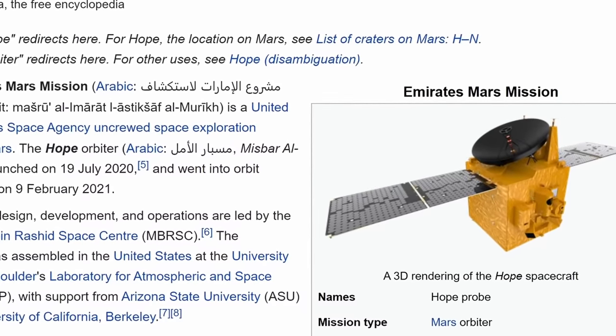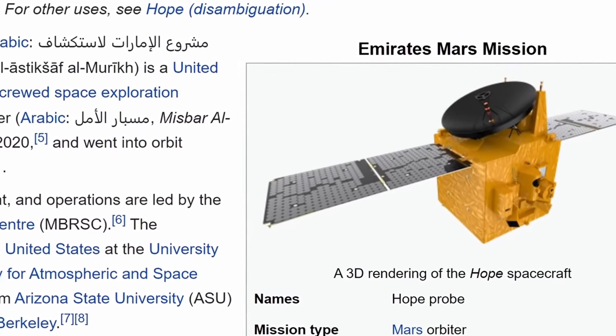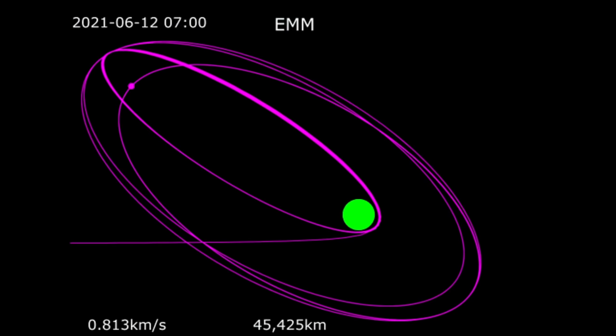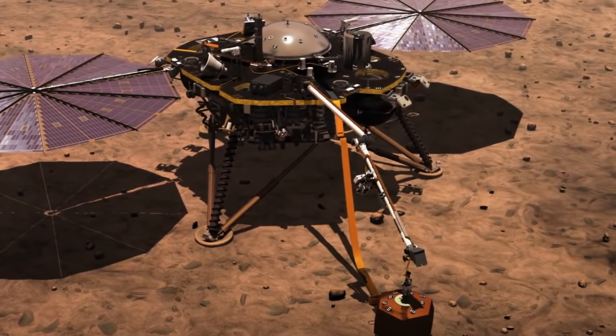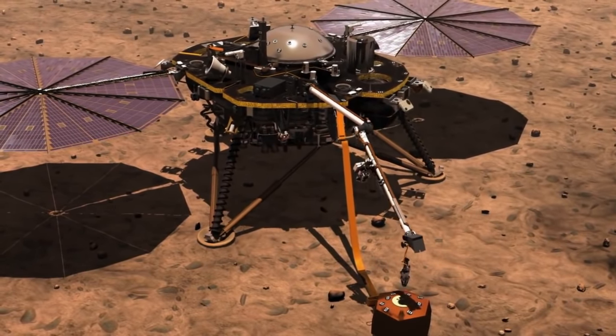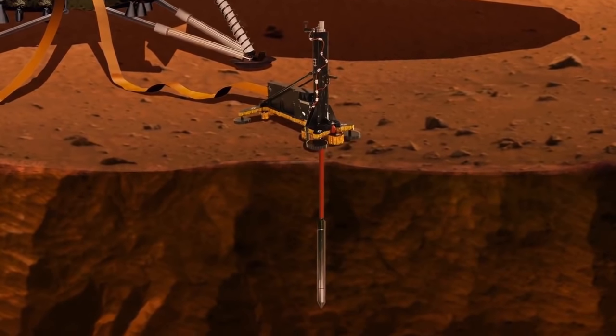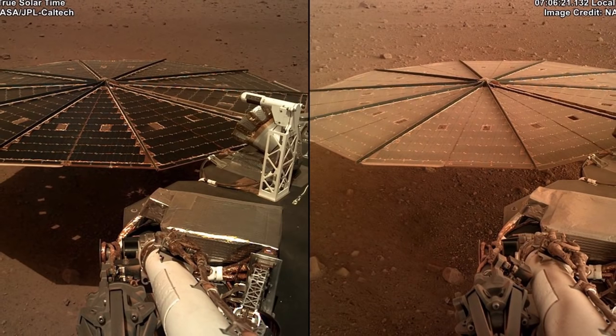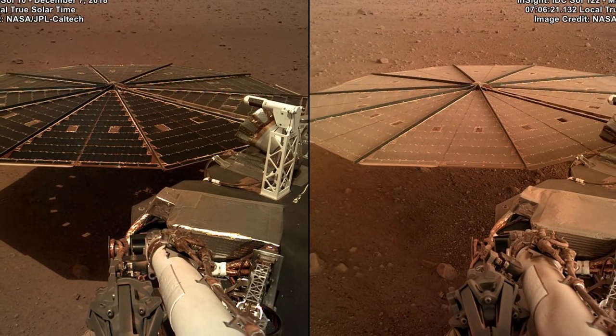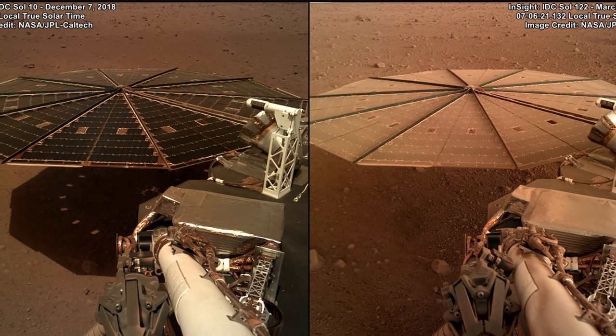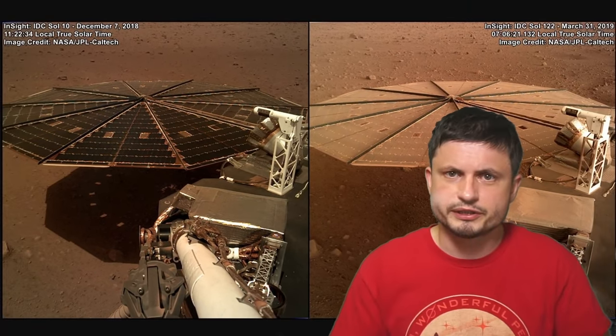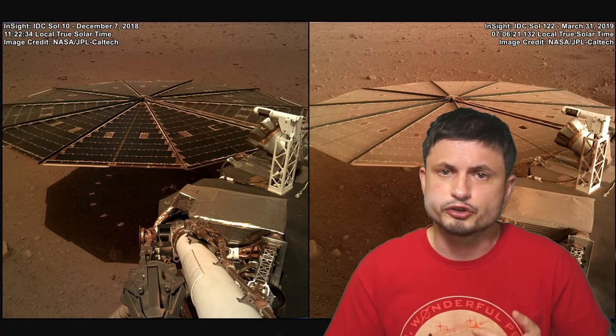One that seems to be performing really well, the probe known as Hope, part of the Emirates Mars mission, which is currently in a permanent orbit around planet Mars, and the InSight probe that you see right here that's unfortunately not doing so well. As a matter of fact, it's currently on its last legs for one simple reason. The reason you see right here. Its solar panels are almost completely covered in Martian dust, which essentially means that the spacecraft might very soon suspend its operations.